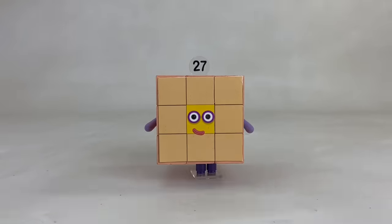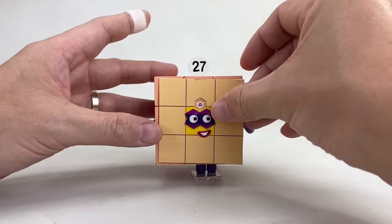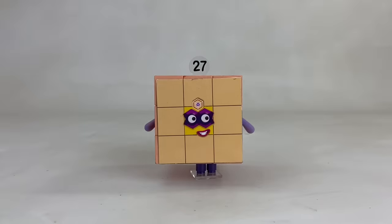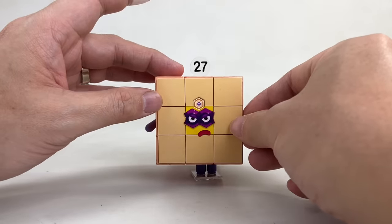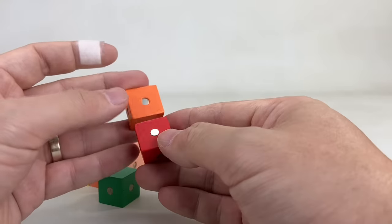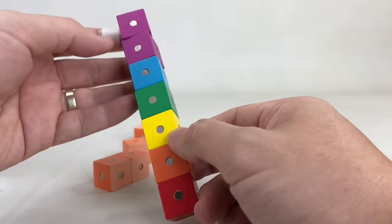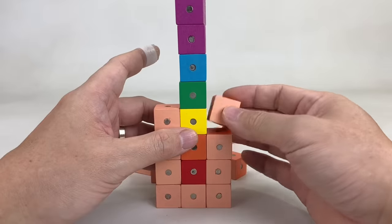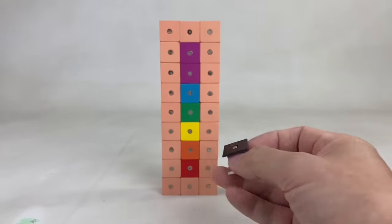She can also have a superhero face when she's a super cube, and an angry face. And when she's not a cube, she's also seen like this, a rectangle, because 27 is 9 threes or 3 nines.